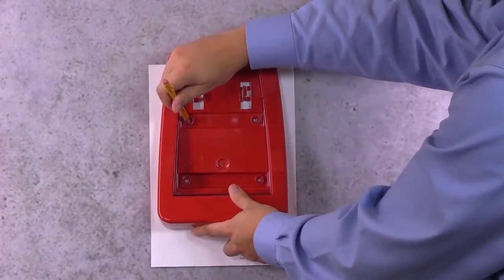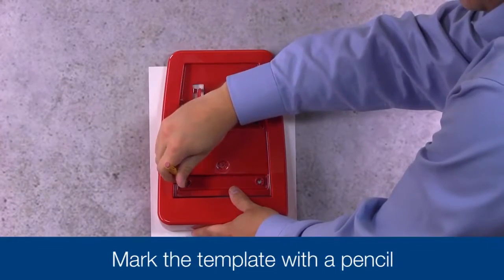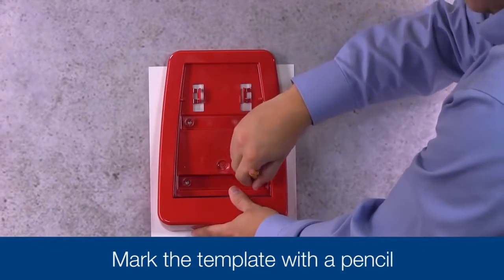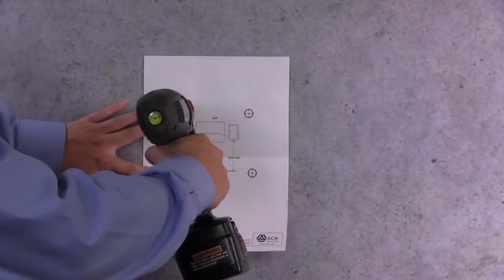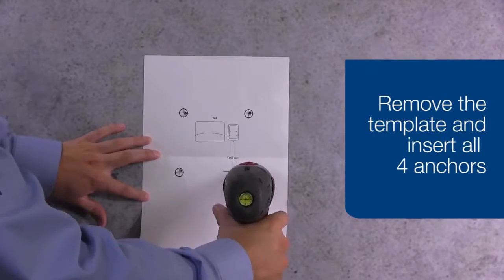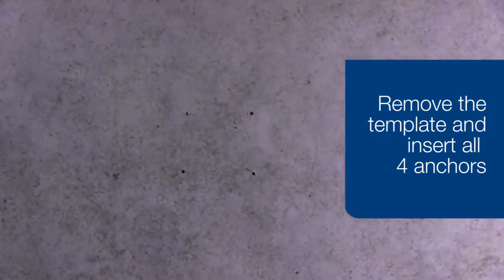Line up the slots in the mounting bracket with the slots on the mounting template and using your pencil mark through the template onto the wall where you will be drilling. Drill the holes, remove the template, and insert the anchors.